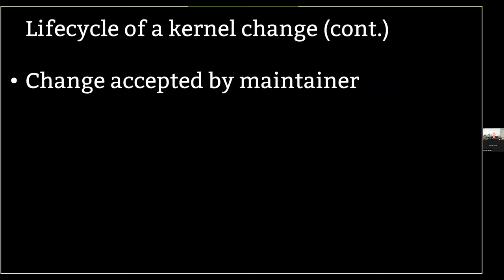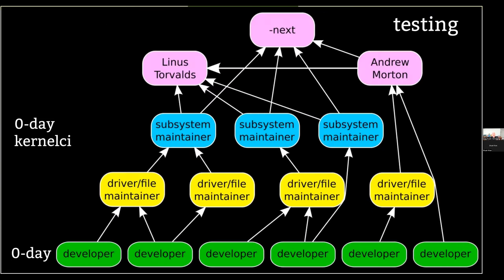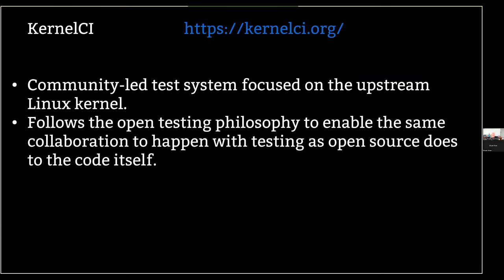When I as a maintainer accept a patch and add it to my tree, the real testing starts. The big tools that kick in are Kernel CI and zero-day. Zero-day runs on all these subsystem maintainer trees — we have about 350 of them. Kernel CI also runs on these trees and starts really finding problems. Kernel CI is now a Linux Foundation project started by embedded developers. It's community-led, run by a bunch of different contributing companies. All the tests and infrastructure are open, allowing us to test the way we do development — all in the open, all together, collaboratively, contributing to a common set of end goals.